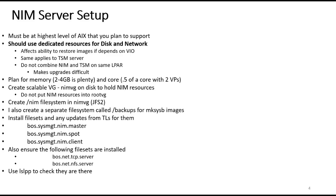You need to plan for memory for your NIM server. If it's running as an LPAR, 4 gig is plenty; I usually give it 8 gig. In terms of CPU, a half a core with two VPs should also be plenty. All of the NIM resources have to go into a volume group — I usually call that NIM VG — and it's created as a scalable volume group. You should never put NIM resources into root VG. I then create a /NIM file system in that volume group, which is JFS2.